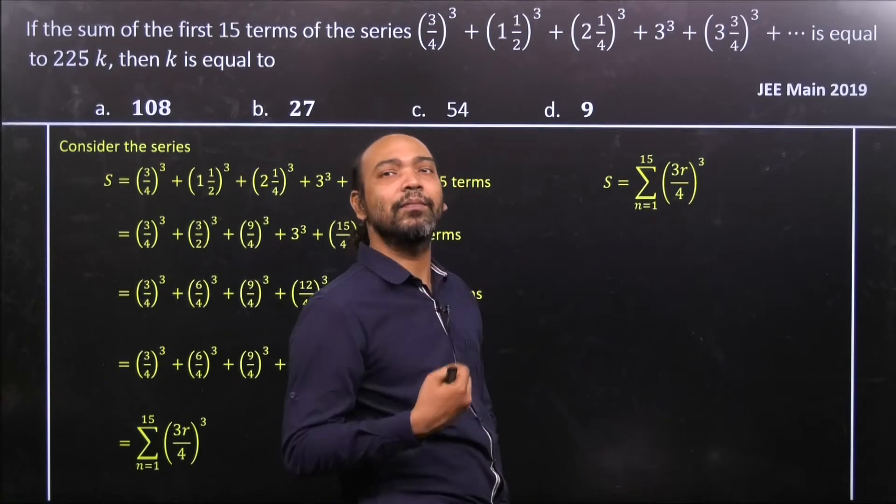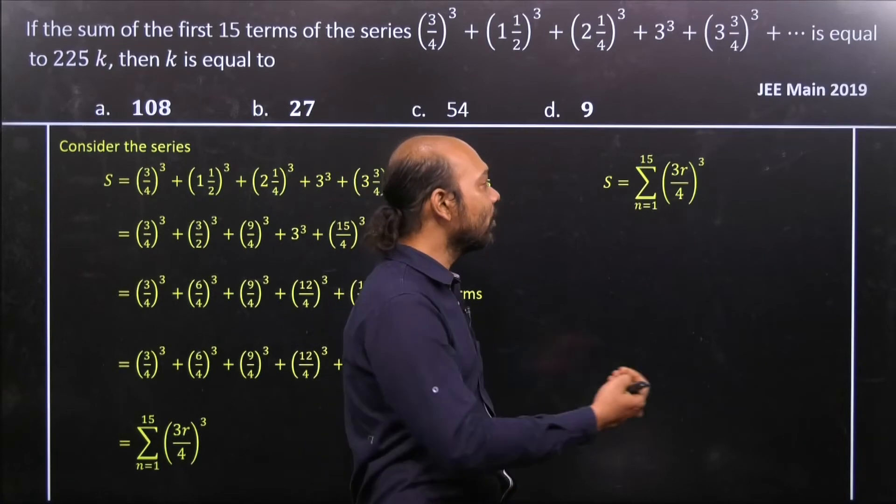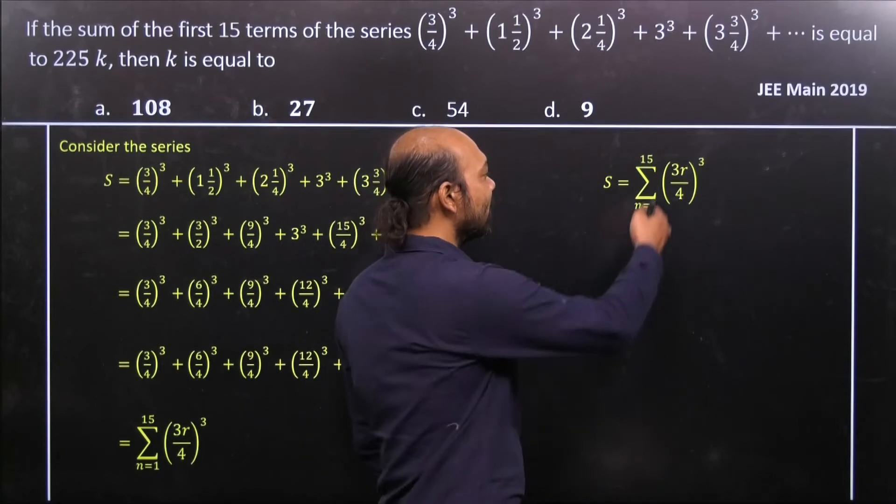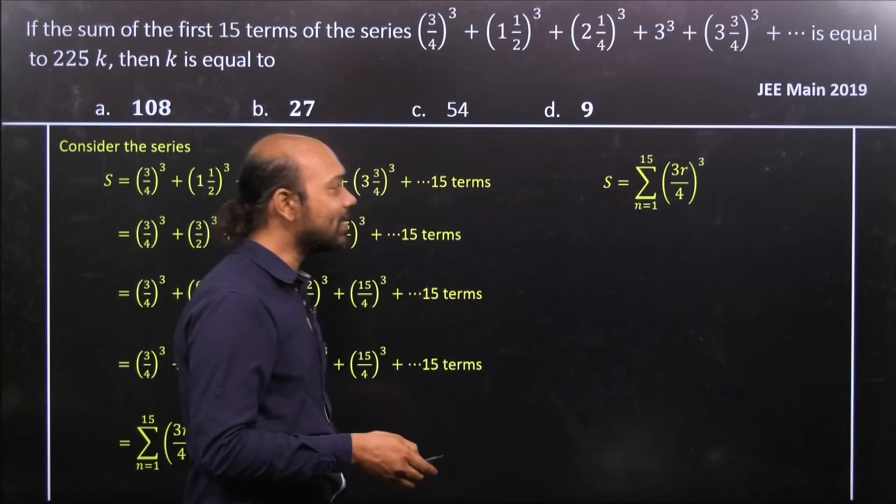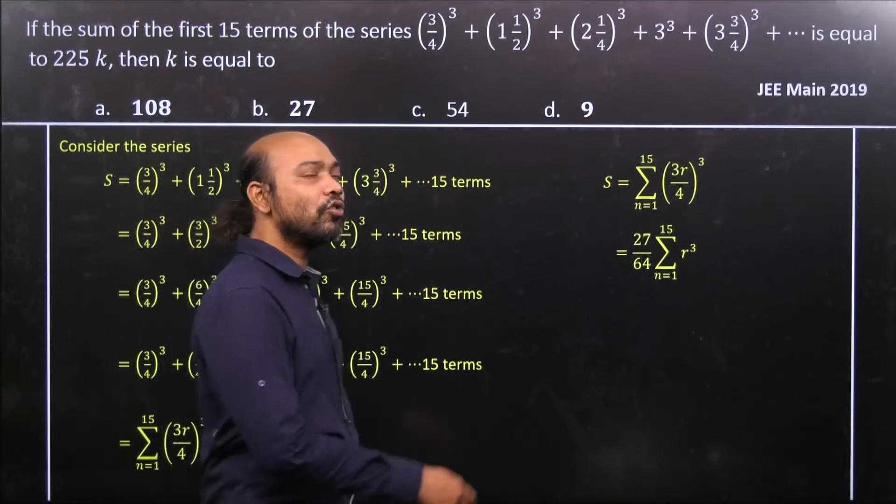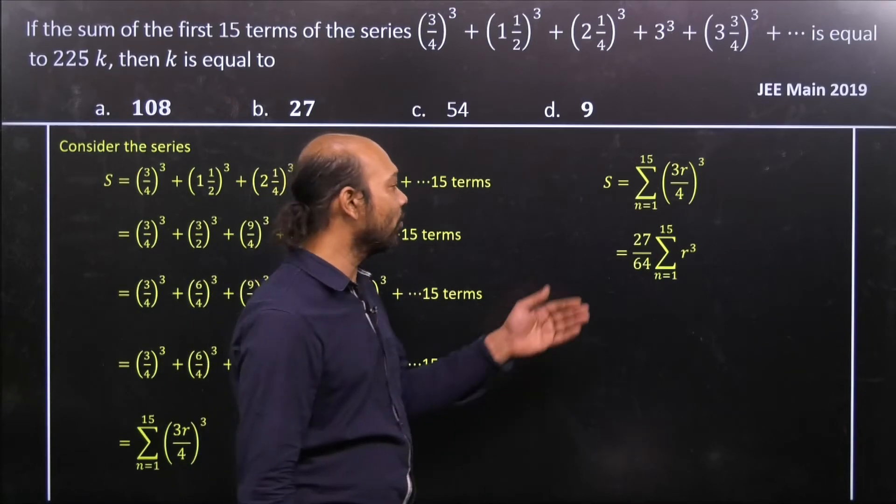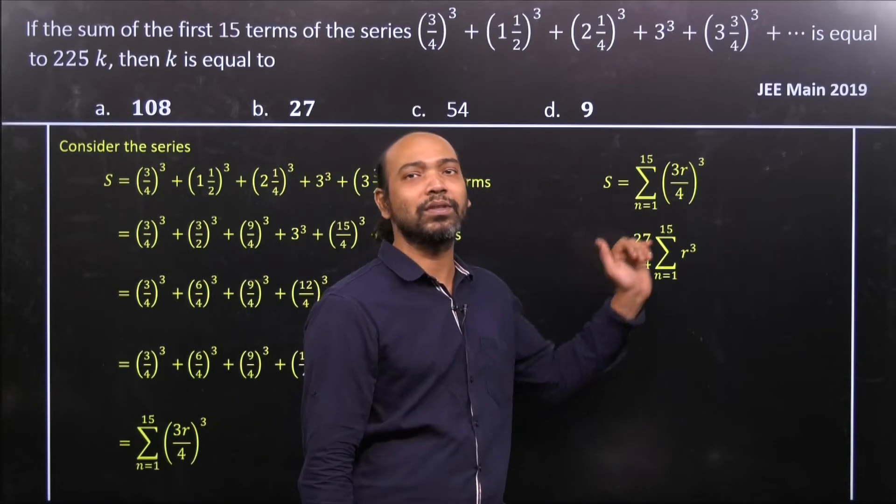Now we know that if it is a constant term, that will always come out from this summation. If it comes out from the summation, it gives you (3³/4³) and summation of r³. So therefore it becomes 27/64, actually here we wrote it as 3³/4³, so 27/64 and summation of r³.